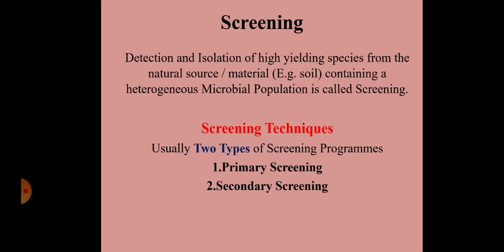That process is called screening. When we study any industrial fermentation, the first thing we need to do is detect and isolate the organism. Screening is the detection and isolation of high-yielding species from natural sources like soil, which contains a heterogeneous microbial population.